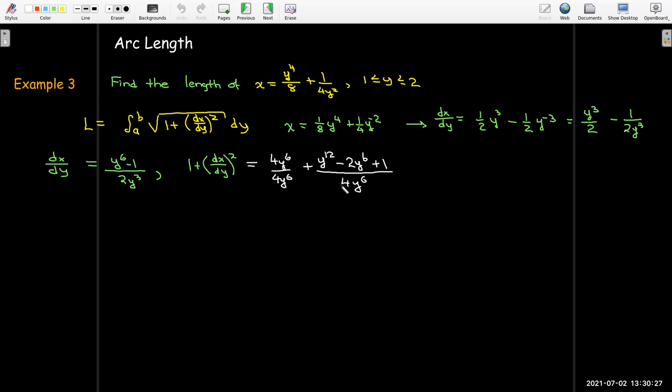Well, I need to square that and add one. So when I square that, my denominator will be 4y⁶, so let me write 1 as 4y⁶/4y⁶. I need to use FOIL to get (y⁶ - 1)² as y¹² - 2y⁶ + 1. And now when I combine like terms, instead of having minus 2y⁶, I have plus 2y⁶.